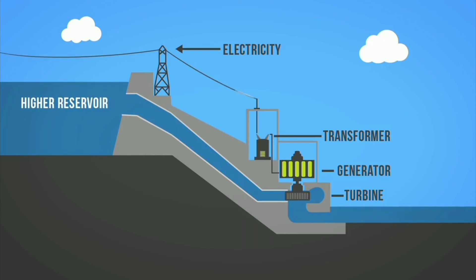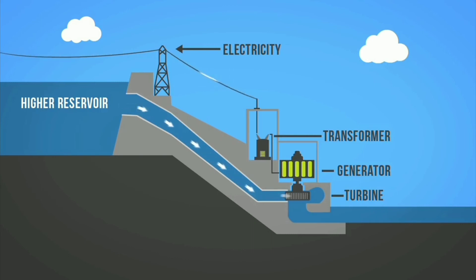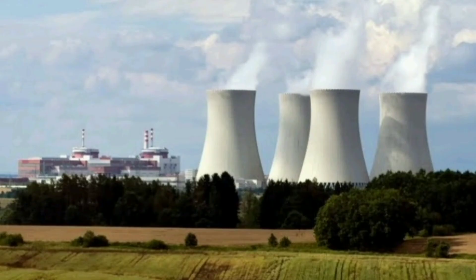And through a penstock pipe we can take that water to generate electricity. The next usage of water is it is used as a coolant in power generation — especially in nuclear reactors. In nuclear reactors the fission process generates heat energy. To remove that heat energy we are using this water as a coolant, and also we can produce electricity.